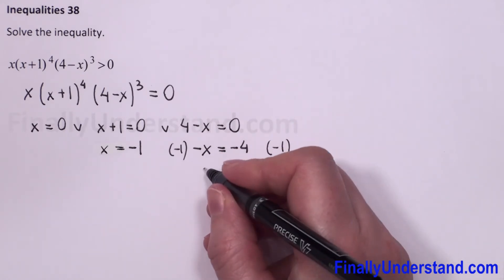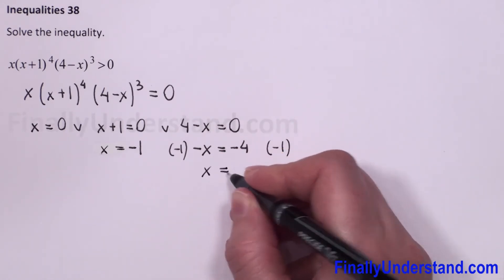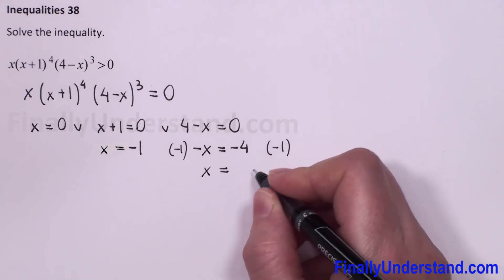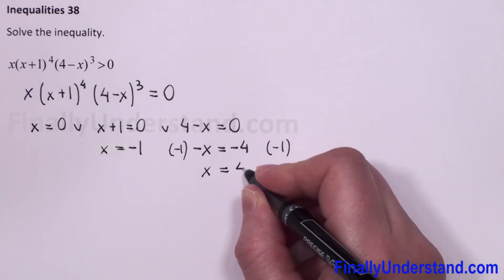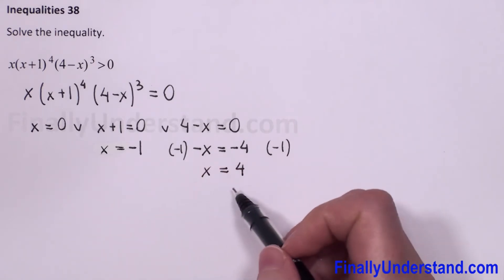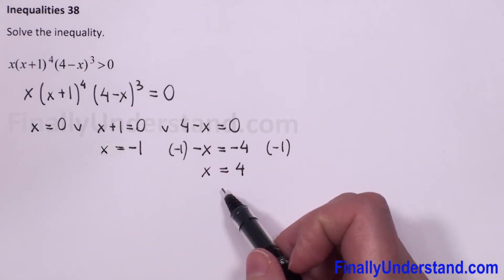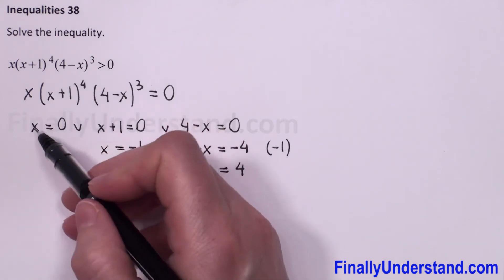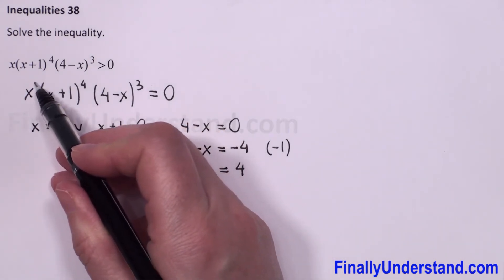For the third equation, negative x equals negative 4. We multiply both sides by negative 1, and we get x equals 4. So our three roots are x equals 0, x equals negative 1, and x equals 4.